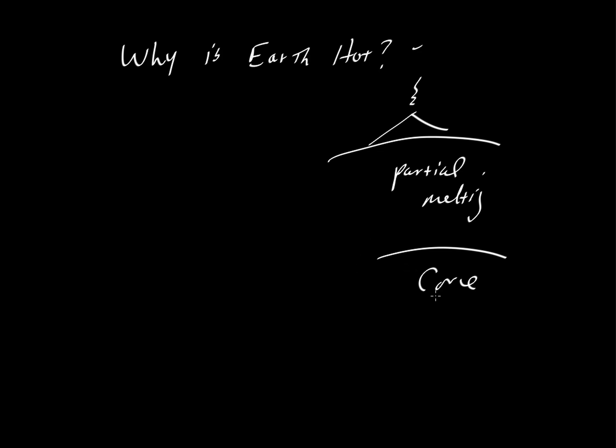And then, of course, the Earth is hot enough that even the outer core is liquid, and then the inner core is solid. So where did this heat come from to allow the core to be partially molten, or almost fully molten in its outer parts, a partially molten mantle that drives volcanic activity and then also plate tectonics? Where did this heat come from?